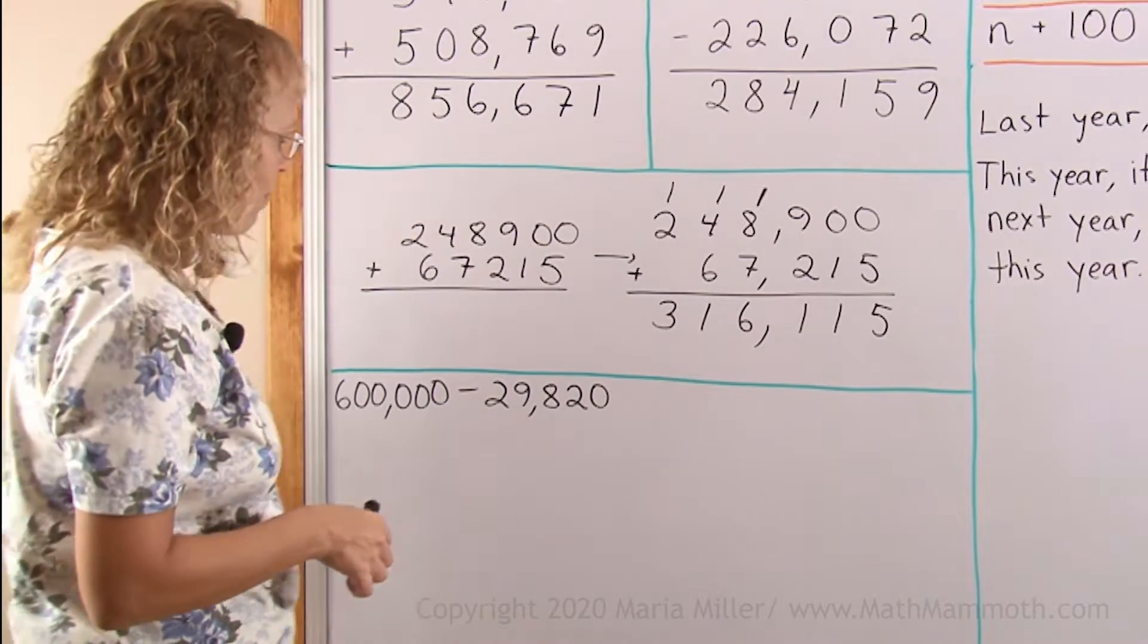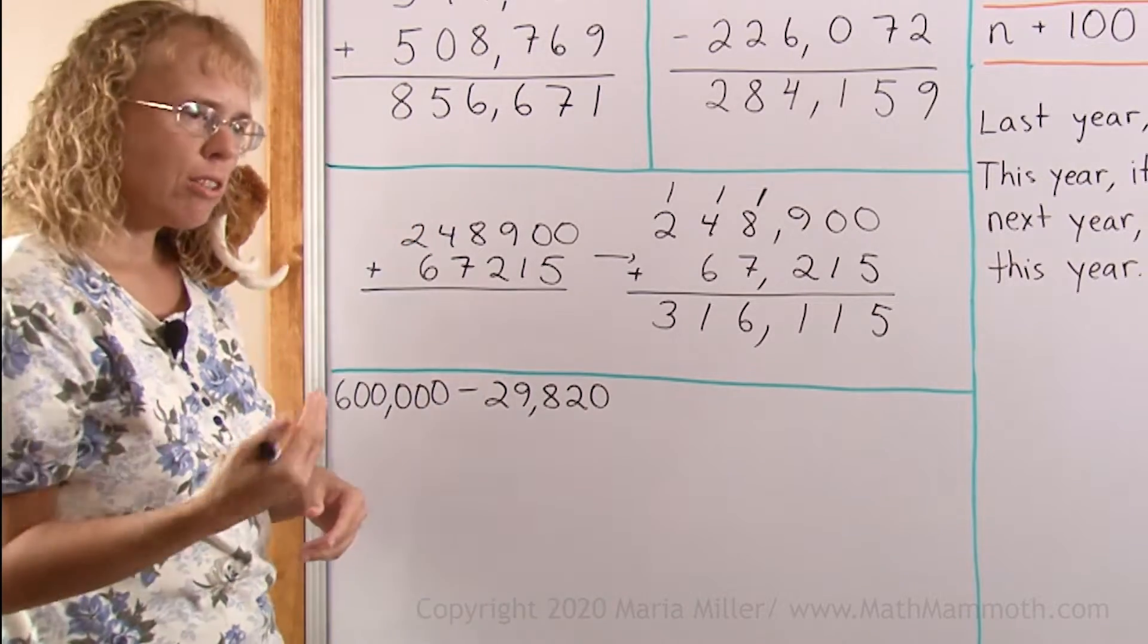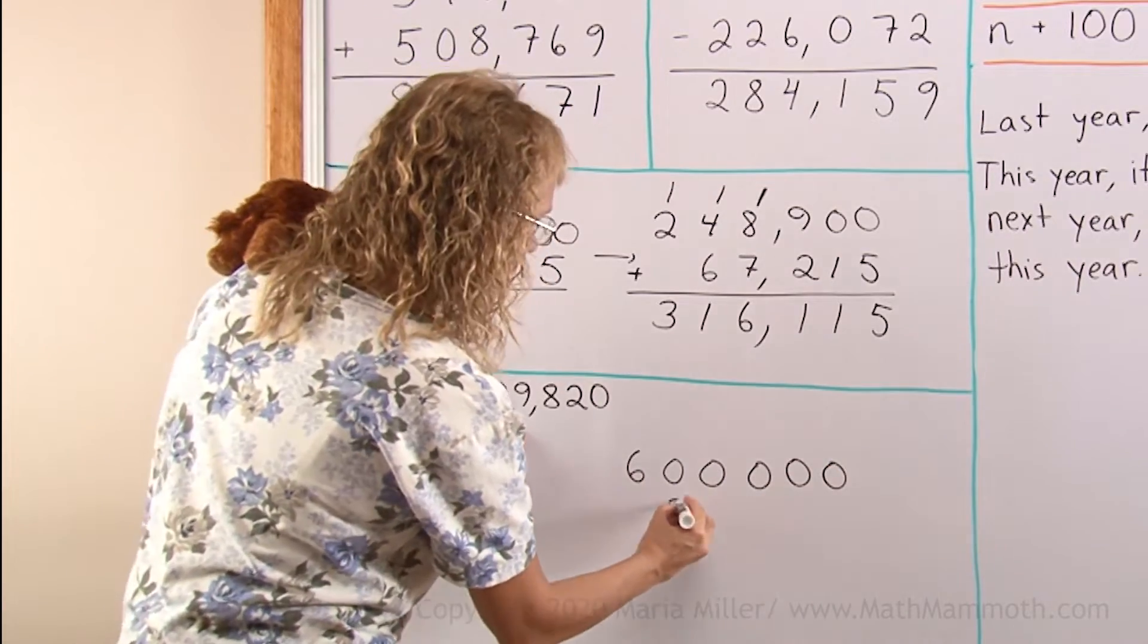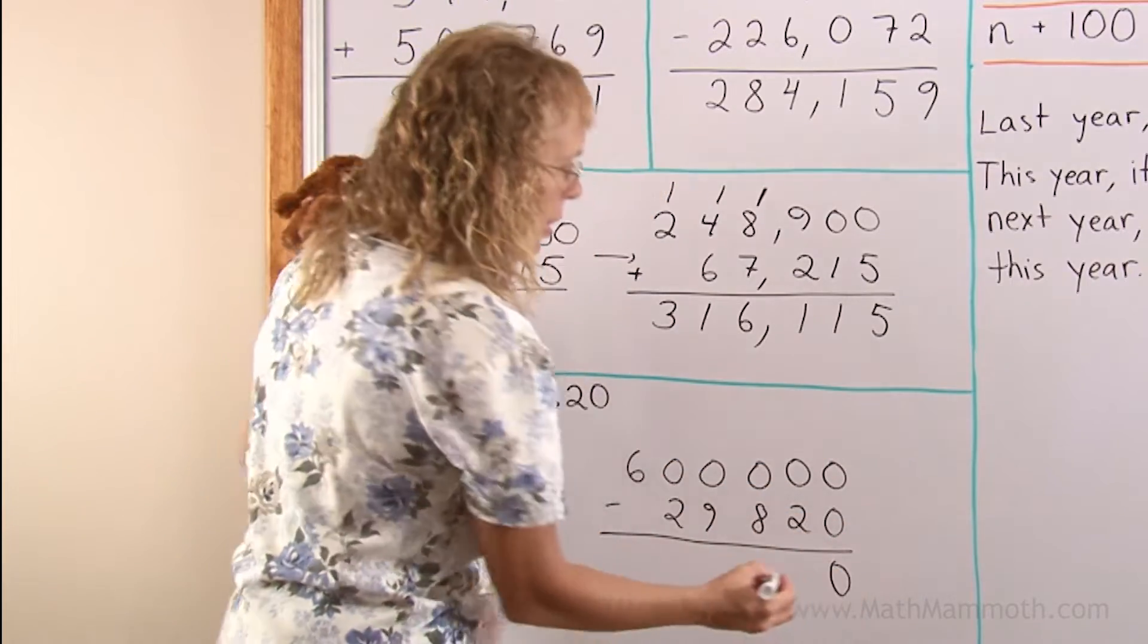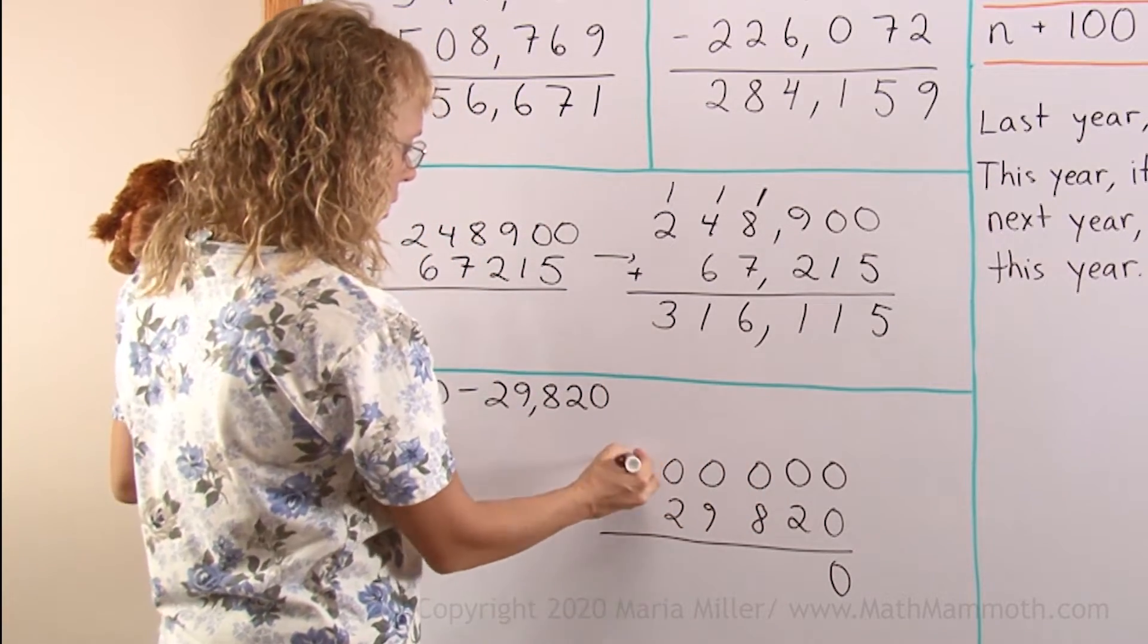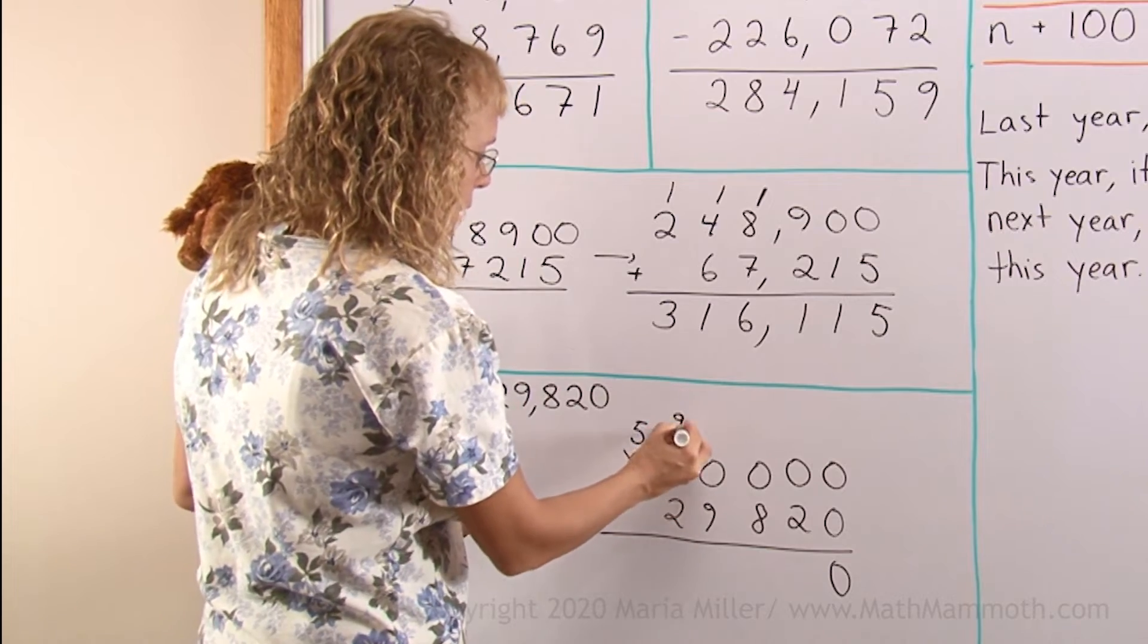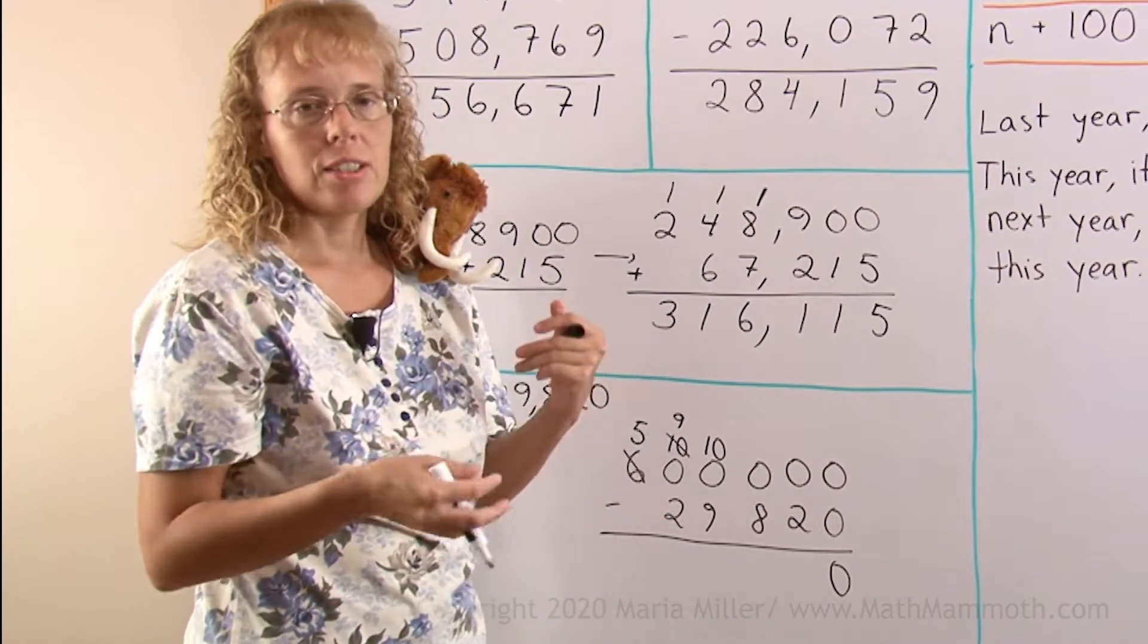Now, let's look at the subtraction problem here. And I want to especially look at this one because it is only zeros here. So, it means we need to borrow over zeros, as they call it. Or regroup over the zeros. Let's look at it. And first I'll write out the numbers over here. 600,000 minus 29,000 and 820. There. And we'll start here. And 0 minus 0 is easy. But then 0 minus 2, that cannot be done. So, we need to borrow or regroup. And we need to go all the way over here to this 6 in the 100,000. Take 100,000 from it. Leave 5 here. And put 10 here. And then we continue borrowing. Take 1 from here. Leave 9 there. And it becomes 10 here. 10 of these units. 10 of the thousands.